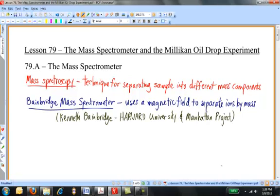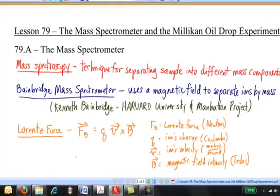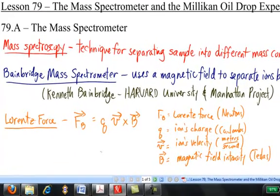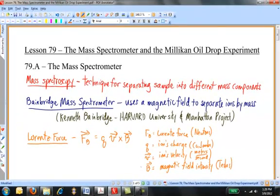In this machine, the Lorentz force, Fb equals Q v cross B, forces sample ions to move in a circular path. This technique was used to separate isotopes of uranium on an industrial scale in a machine that was called a calutron, separating uranium-235 from uranium-238, enriching the fissile isotope uranium-235 at the Y-12 plant in Oak Ridge, Tennessee in 1945, providing much of the uranium used for the little boy nuclear weapon, which was dropped in Hiroshima.